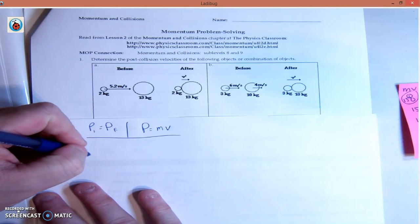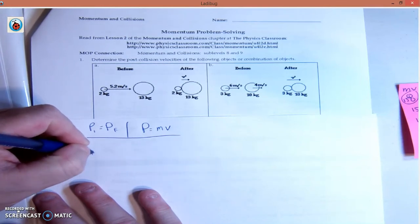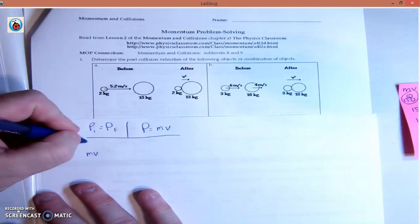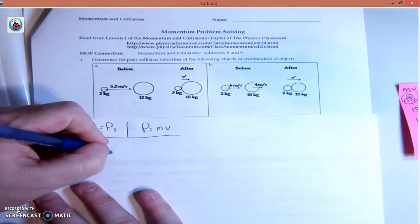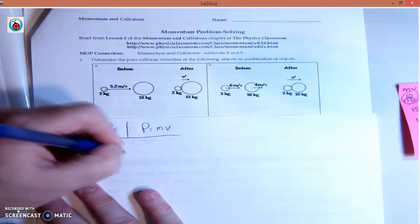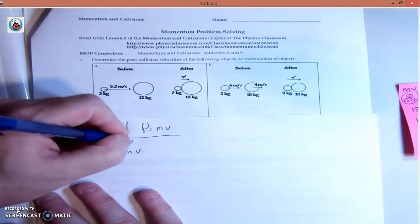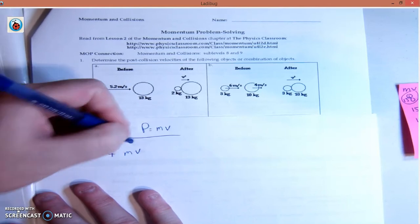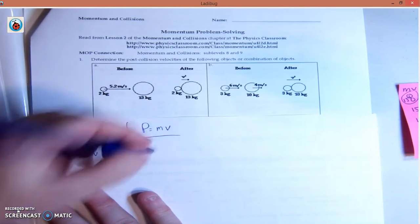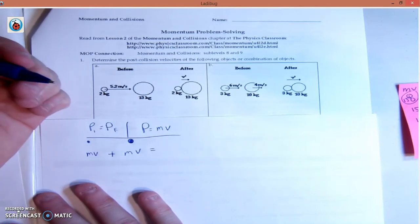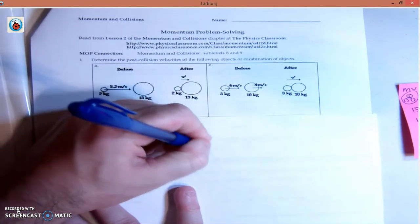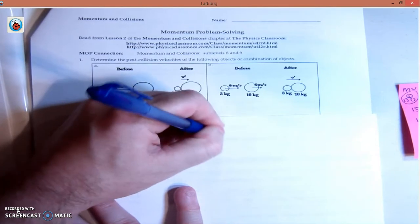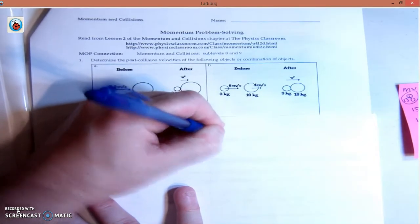The first sphere, the momentum is mass times velocity for the little sphere. I'm going to color it in so you know what it is. Plus mass times velocity for the big sphere. This is the before side, equals mass times velocity little sphere plus mass times velocity big sphere.